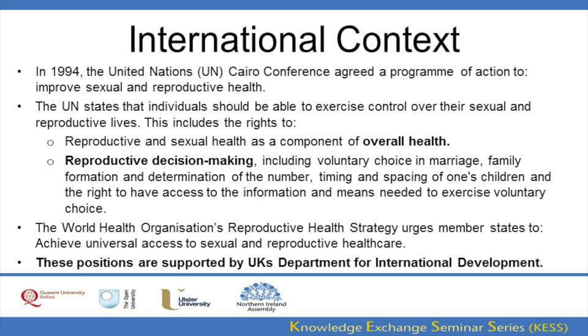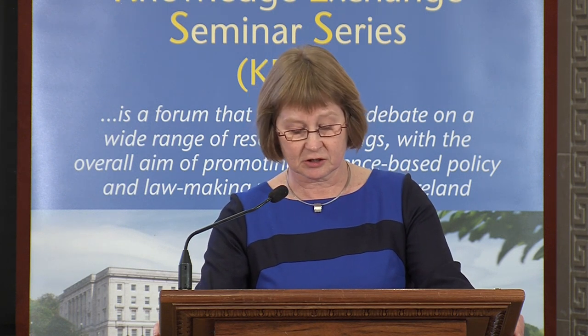One of the most important meetings was the Cairo Conference. In 1994, delegates from more than 179 countries and 1,200 non-governmental organisations met in Cairo at the International Conference on Population and Development, and they agreed a programme of action to improve sexual and reproductive health. Cairo also marked a major shift in approach, incorporating universally recognised human rights, including women's ability to control their own fertility — beginning to think about this in terms of a human right.